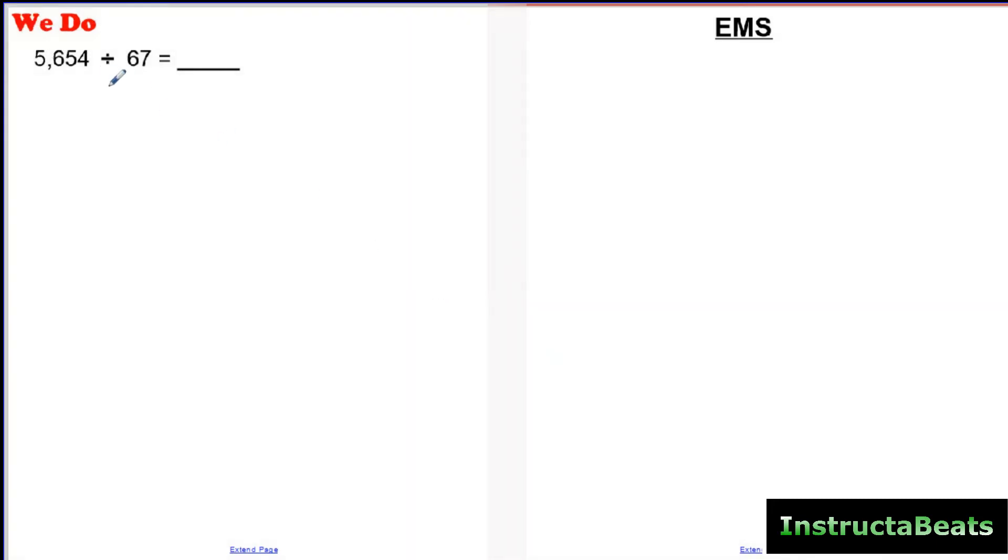So here's our We Do problem. Go ahead and put this in your notes with us. We know that your dividend is 5,654 and you are dividing by 67, which means my easy multiple sheet will be for my divisor of 67.